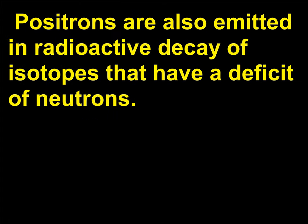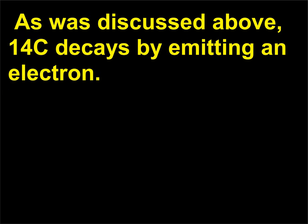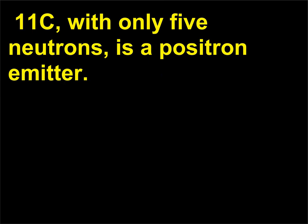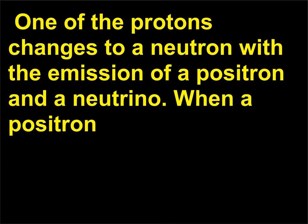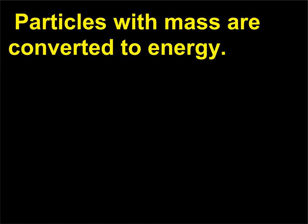Positrons are also emitted in radioactive decay of isotopes that have a deficit of neutrons. For example, stable carbon exists as 12C or 13C, 6 protons and either 6 or 7 neutrons. As was discussed above, 14C decays by emitting an electron. One of the neutrons changes to a proton with the emission of the electron and antineutrino. On the other hand, 11C, with only 5 neutrons, is a positron emitter. One of the protons changes to a neutron with the emission of a positron and a neutrino. When a positron strikes matter the positron and an electron annihilate each other, producing 2 or 3 gammas. Particles with mass are converted to energy.